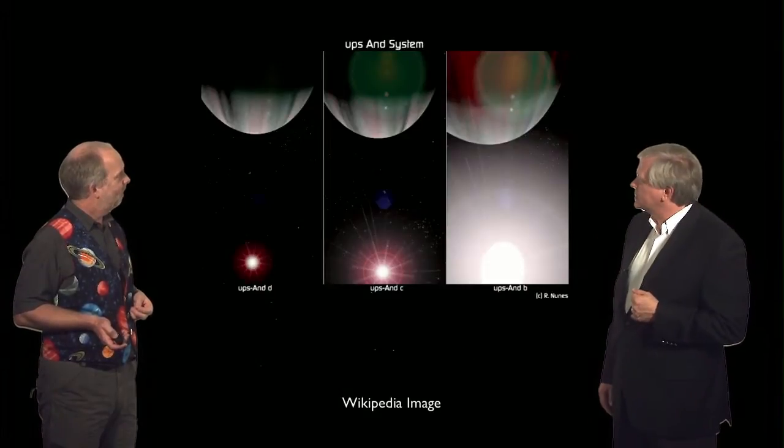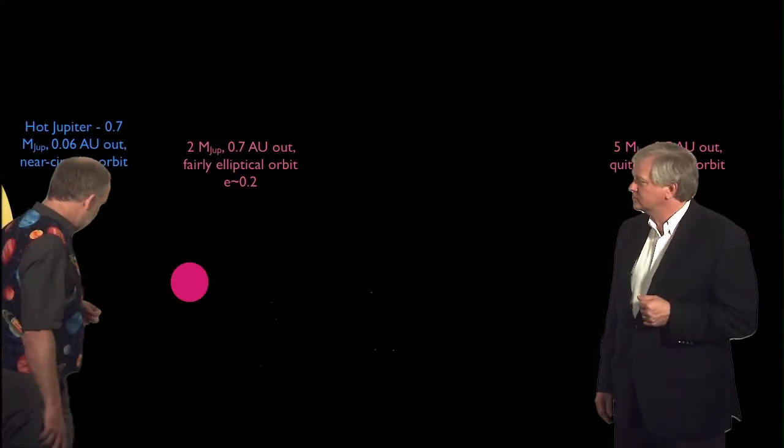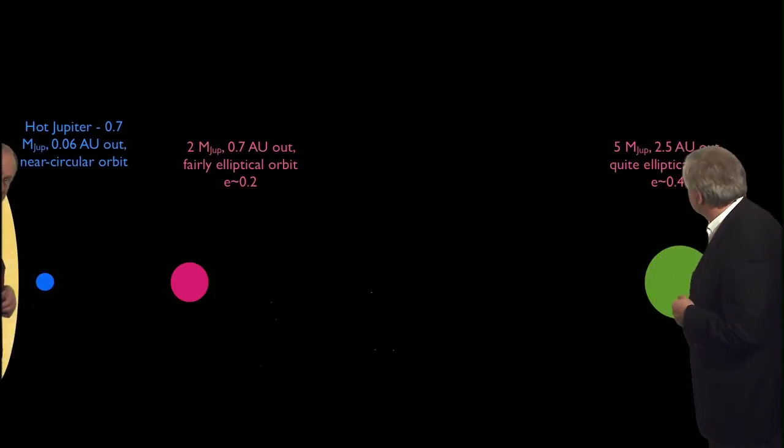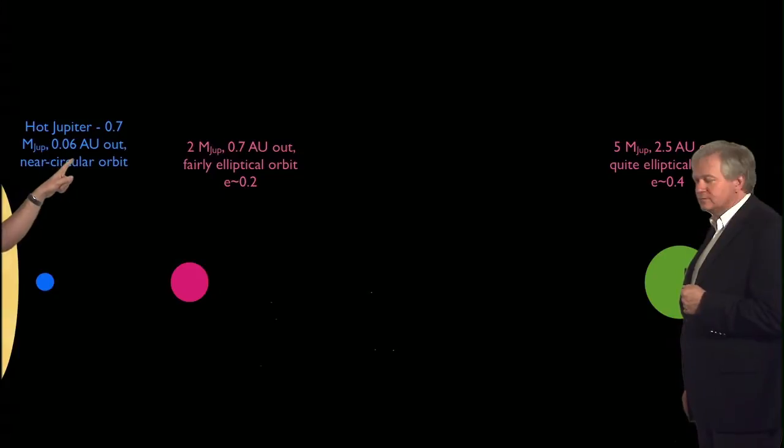So what do the planets look like? Well, here's an artist's impression, but really we've no idea what they look like. Here's the architecture of the system. So here's the star and you've got one planet here, which is a classic hot Jupiter in a nice circular orbit, low ellipticity, about 0.7 Jupiter masses.